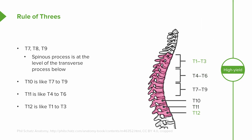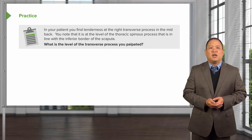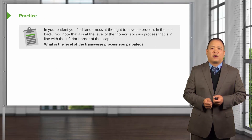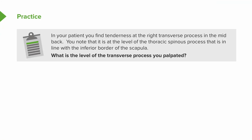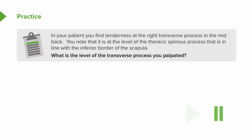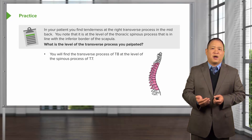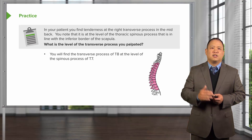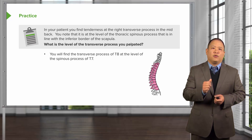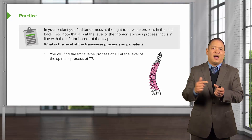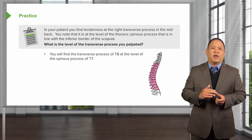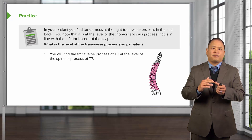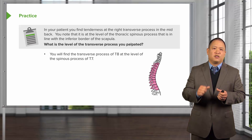T12 functions similarly to T1 to T3, so the spinous process is at the same level. Now let's look at how to utilize this in clinical practice. If you have a patient with tenderness at the right transverse process, and you note it's at the level of the spinous process in line with the inferior border of the scapula, what level is the transverse process? We work backwards: the inferior border of the scapula aligns with the spinous process of T7. Using the rules of three, since T7's spinous process is one full level below its vertebral body, that means you palpated the transverse process of T8.